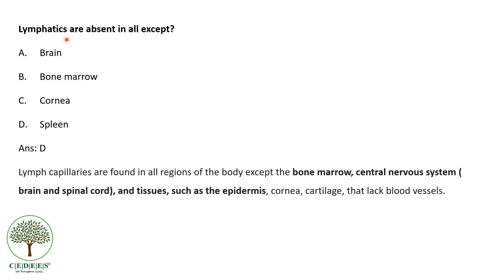Next question: lymphatics are absent in all except? Lymph capillaries are found in all regions of the body except the bone marrow, the central nervous system (brain and spinal cord), and tissues like epidermis, cornea, and cartilage that lack blood vessels. So brain, bone marrow, and cornea don't have lymphatics. The spleen does — in fact, the spleen is a secondary lymphoid organ itself.